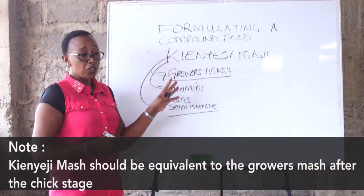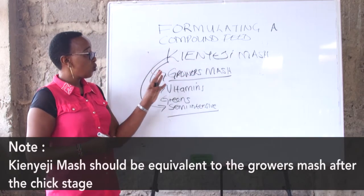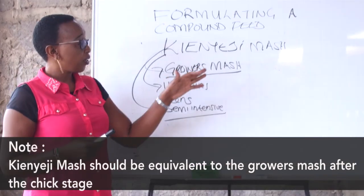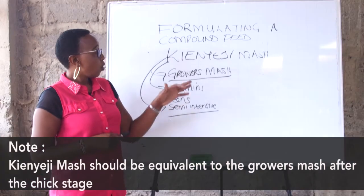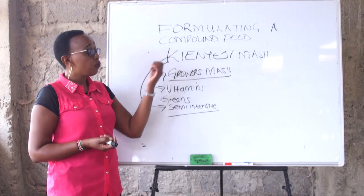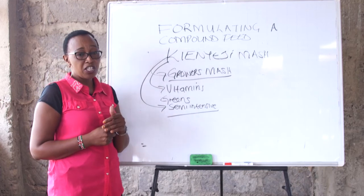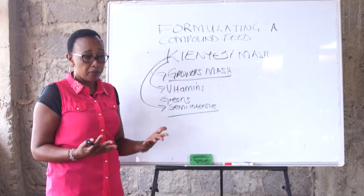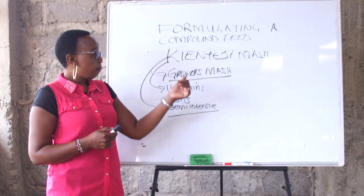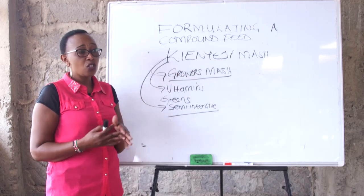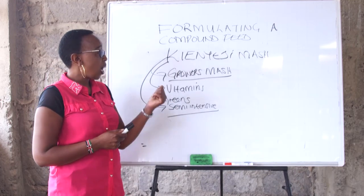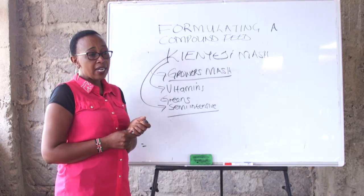Technically and nutritionally, I would say the kianyeji mash is equivalent to a grower's mash because it is not an exotic bird, but also a developing bird. Normally a kianyeji farmer would want the chicks to grow very fast like the exotic chicks — there is no harm if you make a kianyeji mash and give it to the kianyeji bird. From the growing stage to the laying stage to the sale, you can adopt the grower's mash throughout. So let's now see how we can formulate a simple meal of 100 birds.